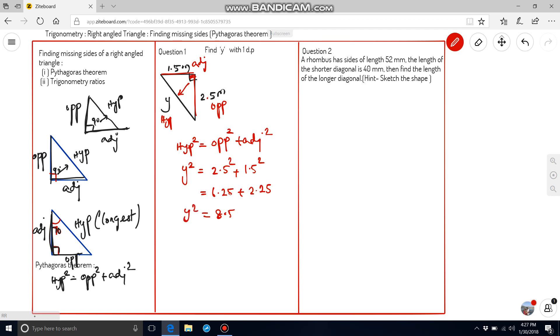We need to find y. So, we have to apply square root on both sides. y is equal to 2.9154. We need the answer with 1 dp correction. It will be 2.9.